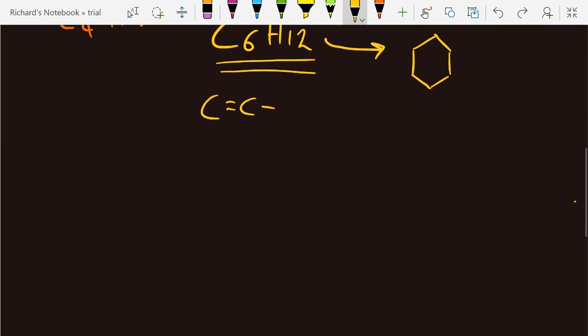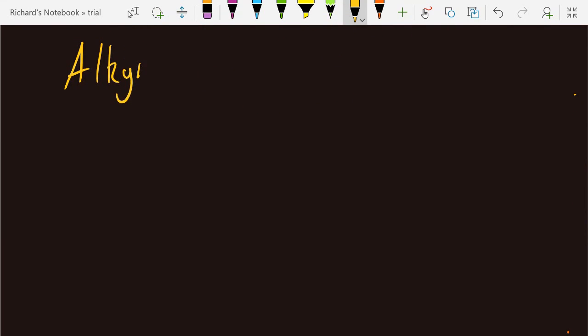Next one is the alkynes. They have a carbon-carbon triple bond. Let's look at the first three members of the alkynes. I'm going to draw out this carbon-carbon triple bond three times. For the first one, that's ethyne, and that's C2H2.